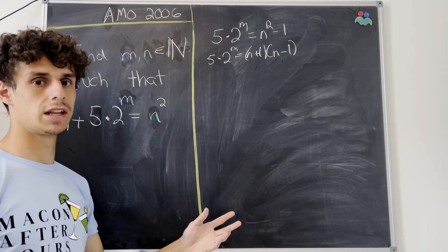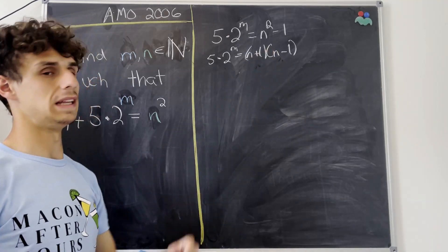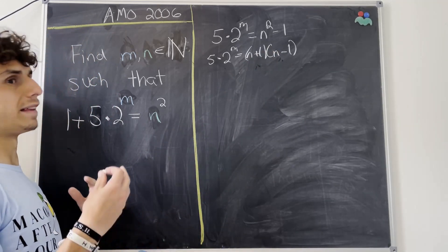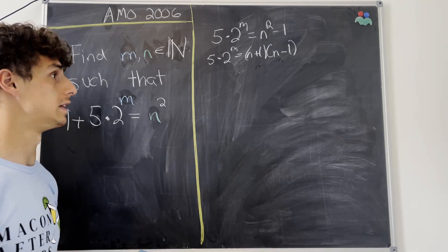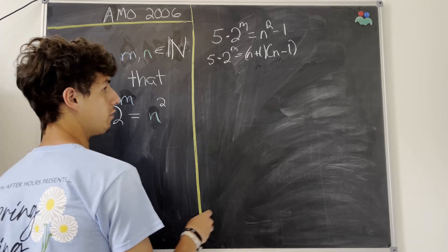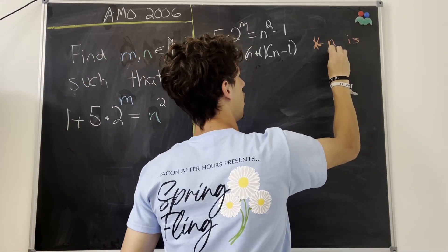And they can't be odd, because an odd number times an odd number results in an odd number, meaning both these numbers have to be even, meaning that n itself has to be odd, because n plus 1 has to be even, and n minus 1 has to be even. So we'll go ahead and make a little note of that, that n is odd.